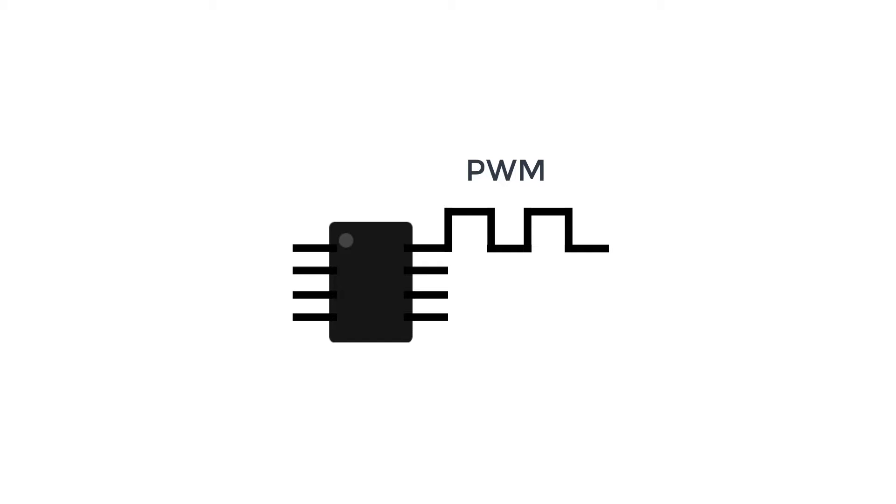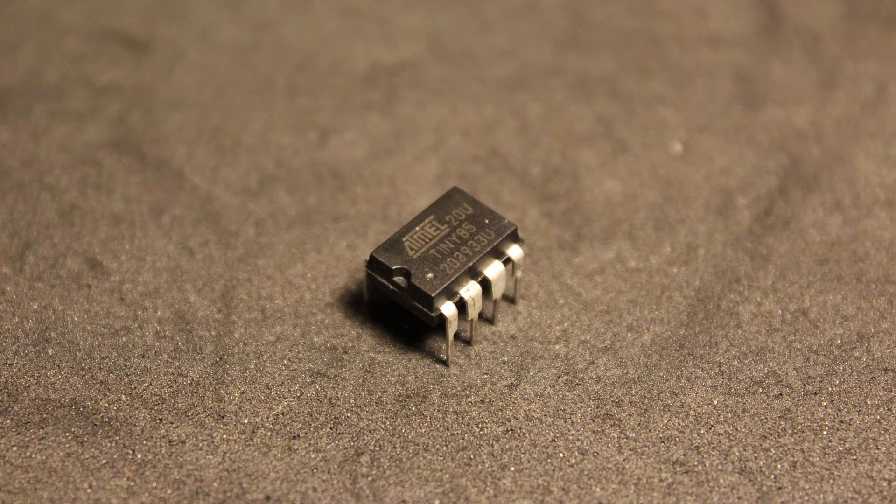We can easily get a PWM signal from a microcontroller, for example the ATtiny85. This is a very small microcontroller and works just like any Arduino. It's very small and relatively inexpensive, which makes it perfect for this kind of project.